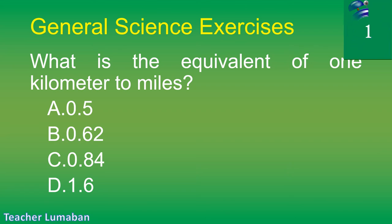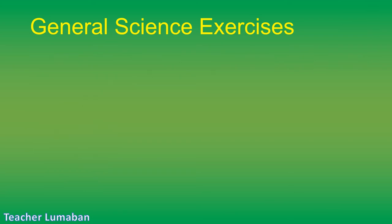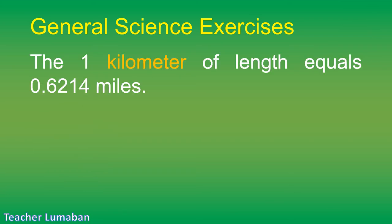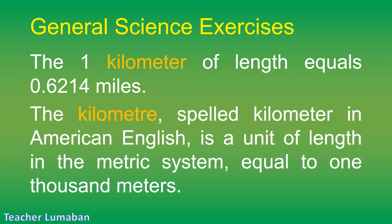The correct answer is Letter B: 0.62. One kilometer of length equals 0.6214 miles. The kilometer (spelled kilometer in American English) is a unit of length in the metric system equal to 1000 meters.